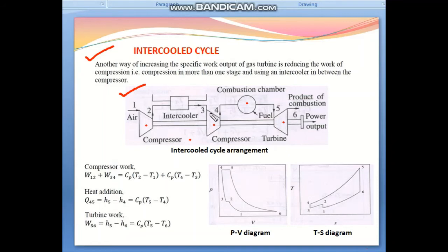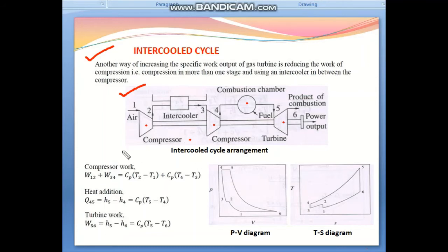Then air enters Compressor 2 — process 3-to-4 — and is compressed adiabatically, so temperature increases again from 3 to 4. The air then goes to the combustion chamber where fuel is added and combustion takes place. The combustion product expands through the turbine adiabatically — process 5-to-6 — and 6-to-1 is the exhaust. This is the basic working principle of the intercooled cycle.